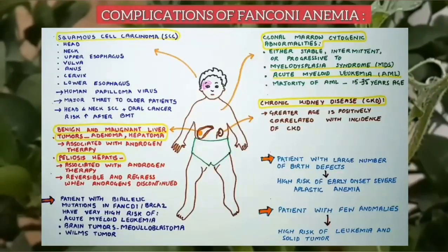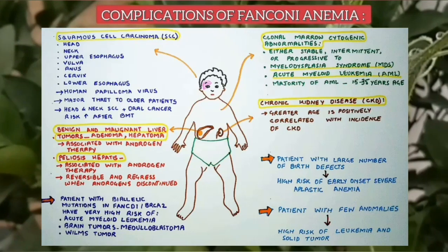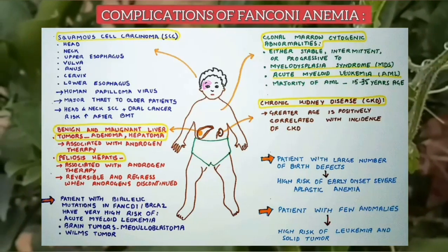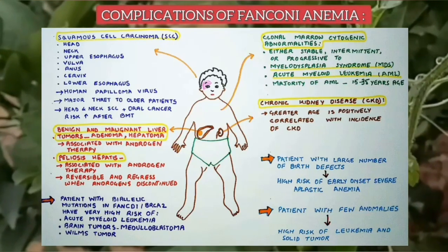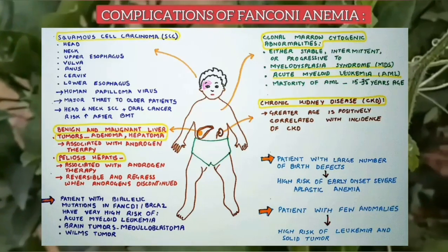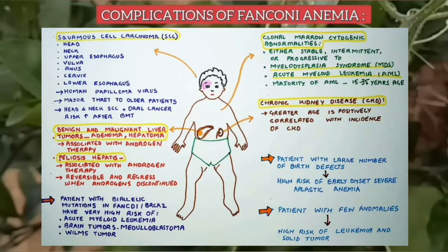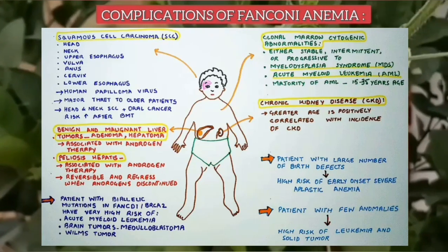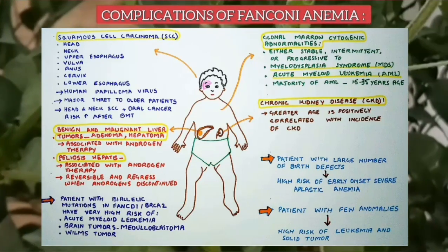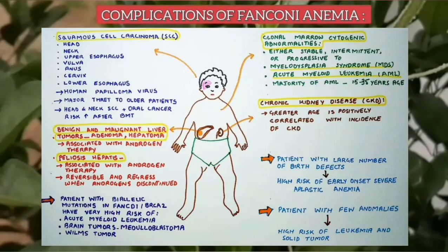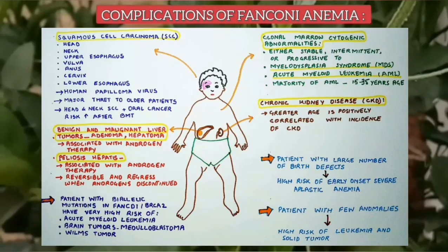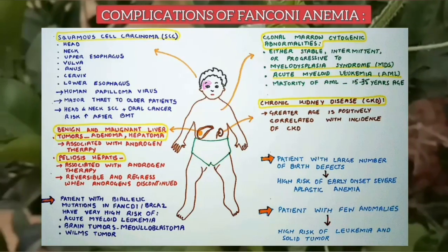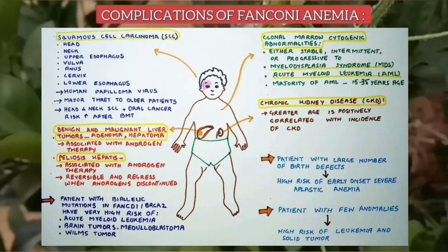An important complication is cancer. The most frequent solid tumors are squamous cell carcinoma of the head, neck and upper esophagus, followed by carcinoma of the vulva, cervix and lower esophagus. Human papillomavirus is the suspected pathogen. Solid tumors remain a major threat to older patients. The risk of head and neck squamous cell carcinoma is higher in patients who received bone marrow transplantation. Benign and malignant liver tumors including adenoma and hepatoma are usually associated with androgen therapy. Clonal marrow cytogenetic abnormalities can progress to myelodysplasia syndrome and acute myelogenous leukemia, which mostly develops between ages 15 to 35 years.